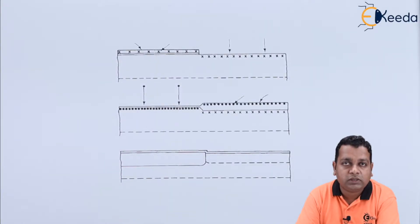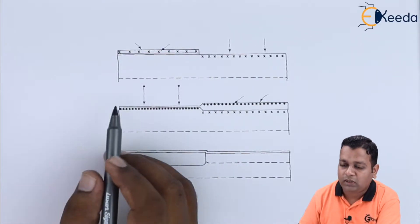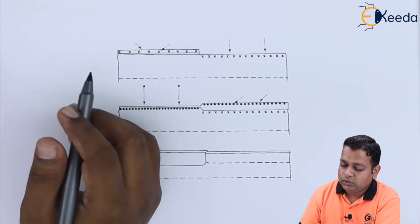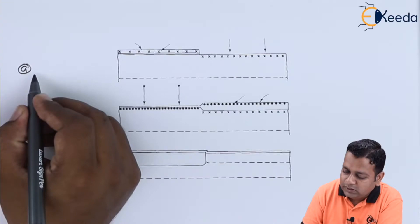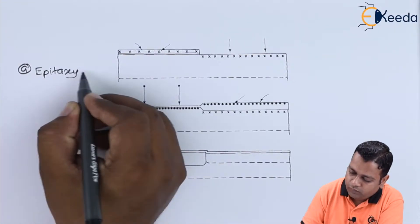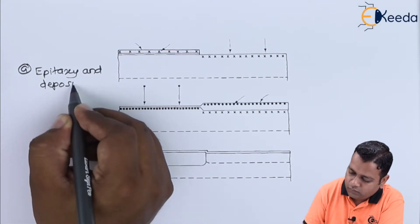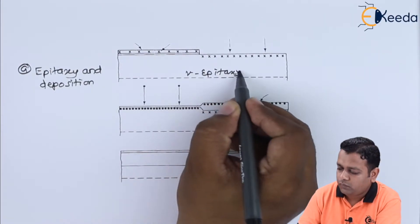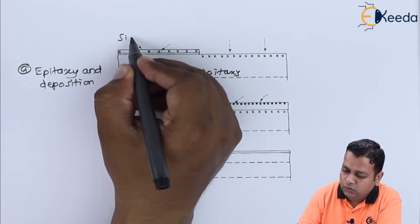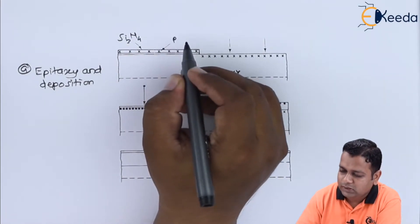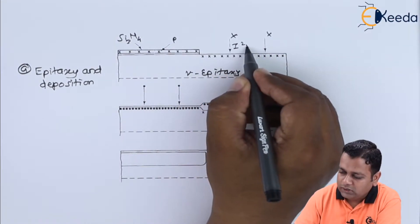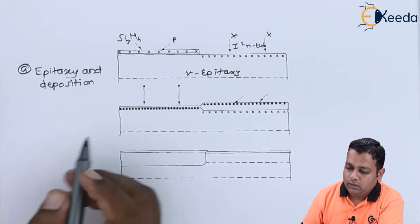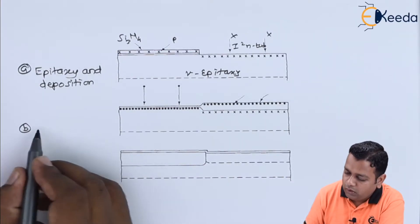Having covered MOSFET and NMOS fabrication, let us move to CMOS fabrication. Several steps are involved, shown through schematic diagrams. The first step is epitaxy and deposition, using Si3N4, capital P, and I-square TURB (tub). The second step B is implantation, again with the N-type epitaxy, I2P TURB, capital B (boron), and silicon dioxide. Step C is the oxidation process for CMOS fabrication, forming a P-type TURB and an N-type TURB on the right-hand side.